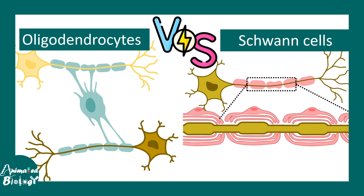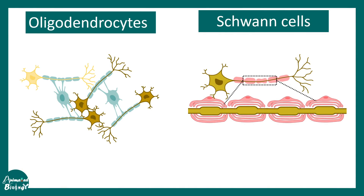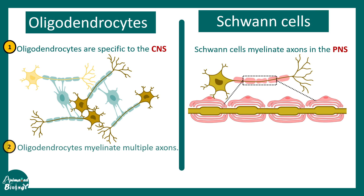In this video we will quickly review the differences between oligodendrocytes and Schwann cells. Oligodendrocytes are glial cell types present in the central nervous system, whereas Schwann cells are glial cell types present in the peripheral nervous system.